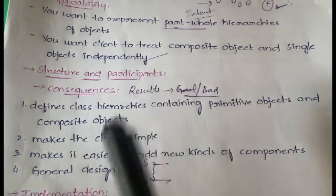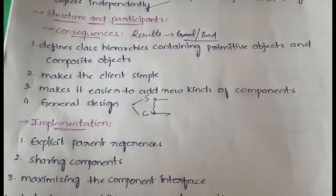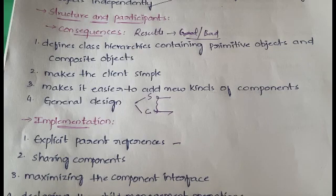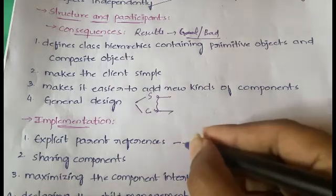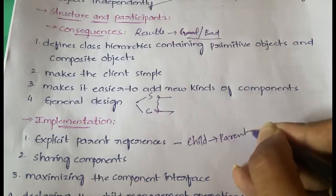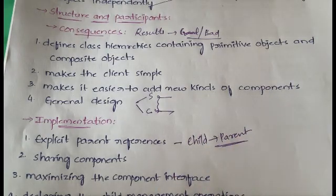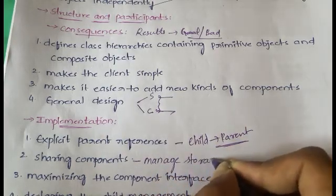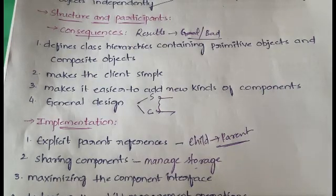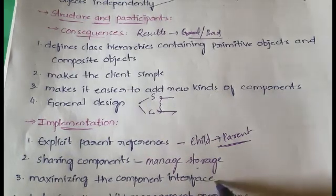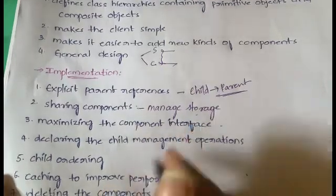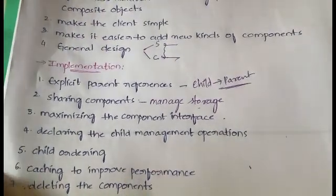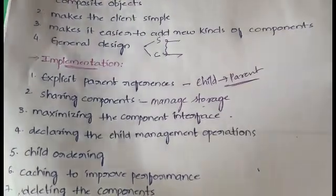Moving on to implementation. First is explicit parent references: every child maintains a reference to its parent, which simplifies management of the composite structure. Second is sharing components: shared components help manage storage, avoiding creation of individual objects every time. Third is maximizing the component interface. Fourth is declaring child management operations, child ordering, and caching to improve performance.